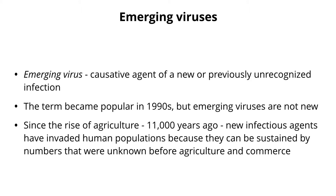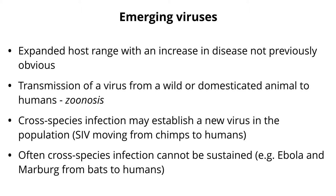In more recent history, since humans started clustering together in cities around 11,000 years ago, when we began to develop agriculture and animal husbandry that could support cities, that's when viruses started entering humans in a big way, most likely. A lot of the viruses we have today are remnants of that crossover.